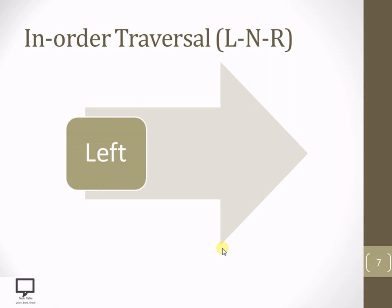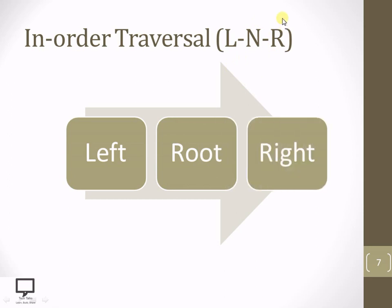So first of all: L stands for left, N stands for root node, and R stands for right. This same sequence we are supposed to follow while traversing a tree in in-order. We need to keep in mind that in-order traversal is a depth first traversal.